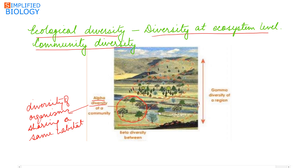As the habitat changes, species also change. Beta diversity is the diversity seen between different communities. The trees, plants, and animals in one habitat will be completely different from those in another habitat. The difference in species composition of communities can be seen along an environmental gradient — for example, as we move to higher altitudes, different plants and animals are found at each elevation.